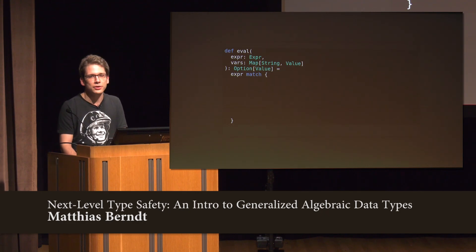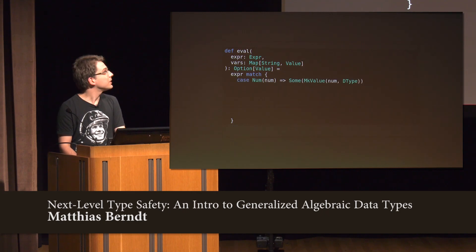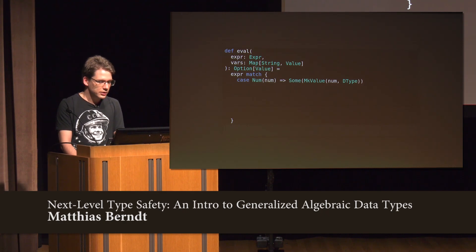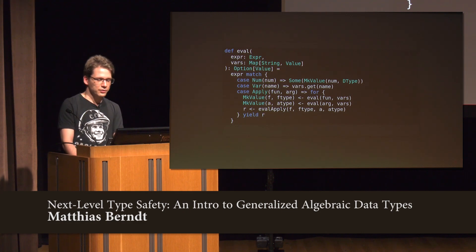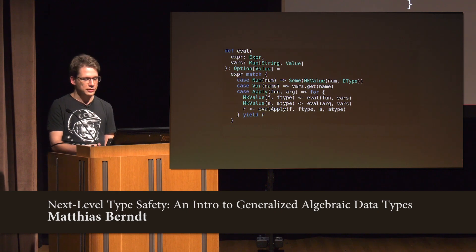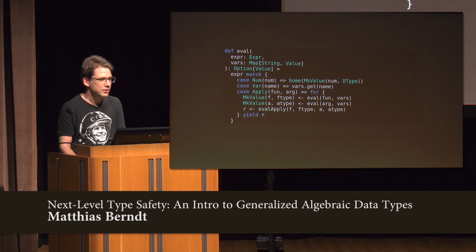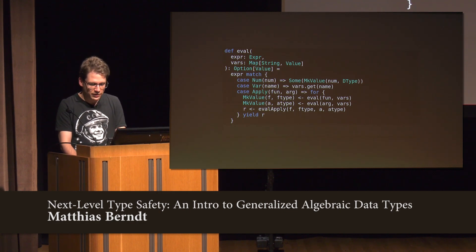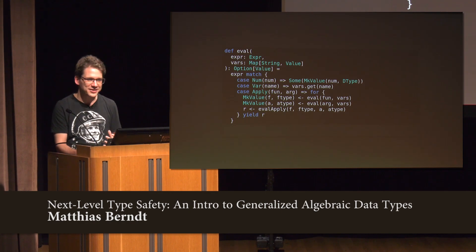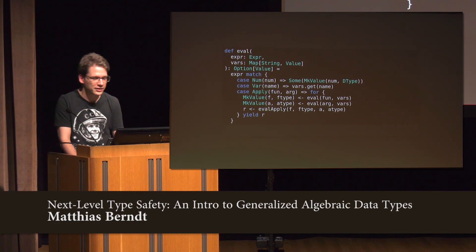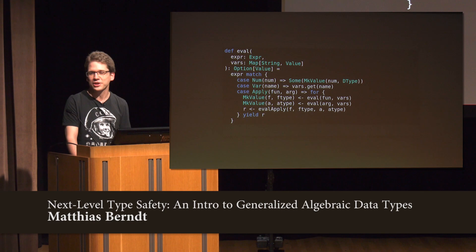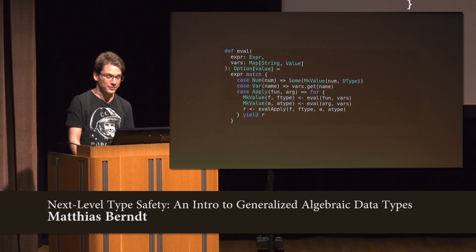This is the last piece to put it all together. If we're evaluating a number, we return it packaged with the Double type. If it's a variable, we look it up. If it's a function application, we recursively evaluate the function and its argument, then use the 'evalApply' function we defined earlier. I find it really exciting that this is impossible to get wrong — we get such strong guarantees from the compiler. The compiler checks that we wrote our own type checker for our own little compiler correctly, which I find really awesome.